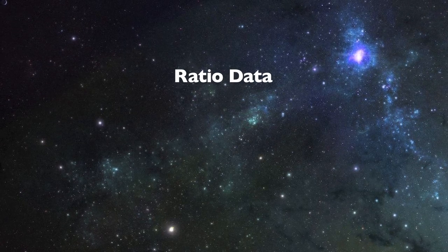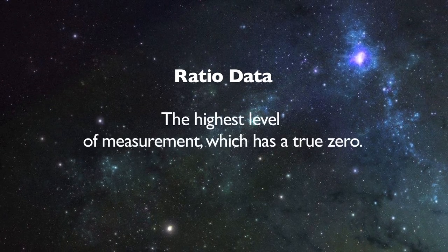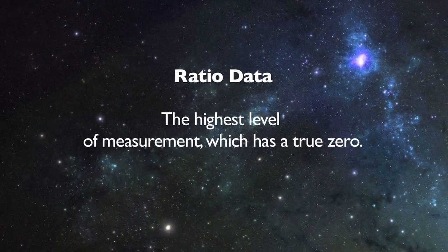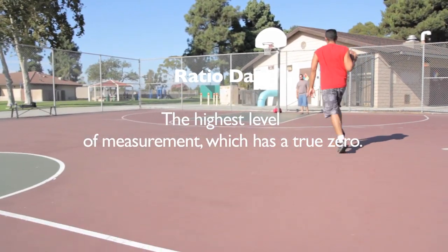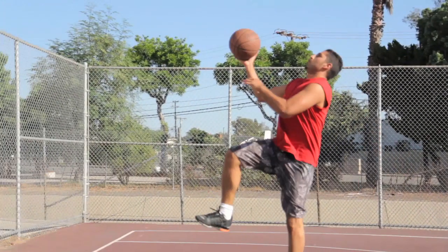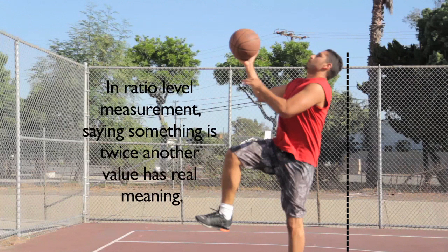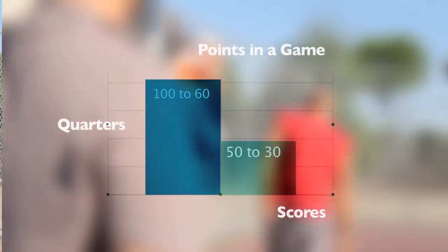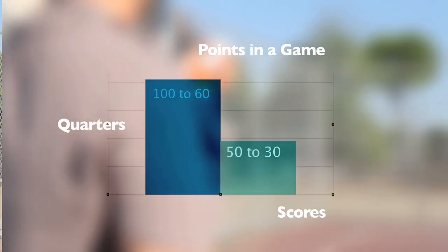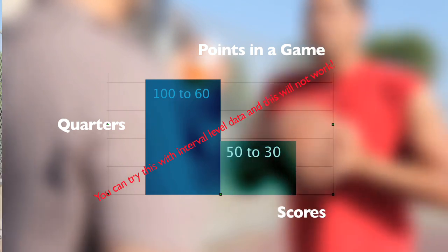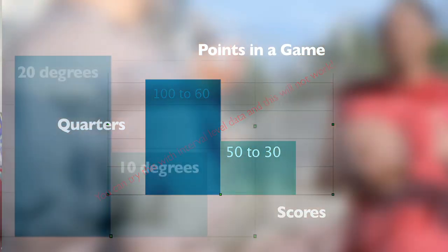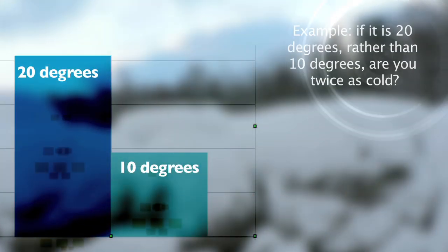Finally, we have ratio data — the highest level of measurement, which has a true zero, like the number of baskets made during a basketball game or the height of the tallest basketball player. In ratio level measurement, saying something is twice another value has real meaning, like the score at the end of the game was twice the score at halftime. You cannot do this with interval level data — for example, if it's 20 degrees rather than 10 degrees, are you twice as cold?